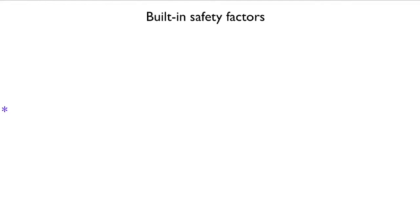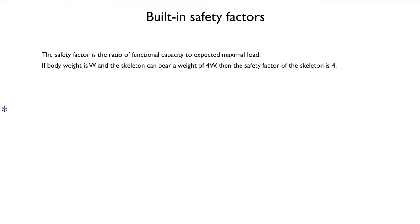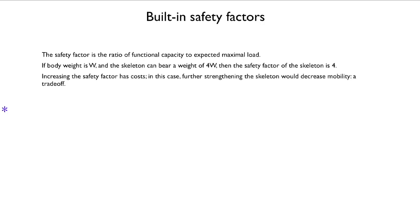These can be thought of as built-in safety factors. A safety factor in engineering is the ratio of functional capacity to expected maximal load — bridges are built with very strong safety factors. To illustrate: if the body weight is W and the skeleton can bear a weight of 4W, then the safety factor of the skeleton is 4. That would mean a person could stand upright and experience an acceleration of 4 times gravity in a rocket and the bones wouldn't break. Increasing the safety factor has costs — in this case, further strengthening the skeleton would probably decrease mobility. That would be a trade-off.